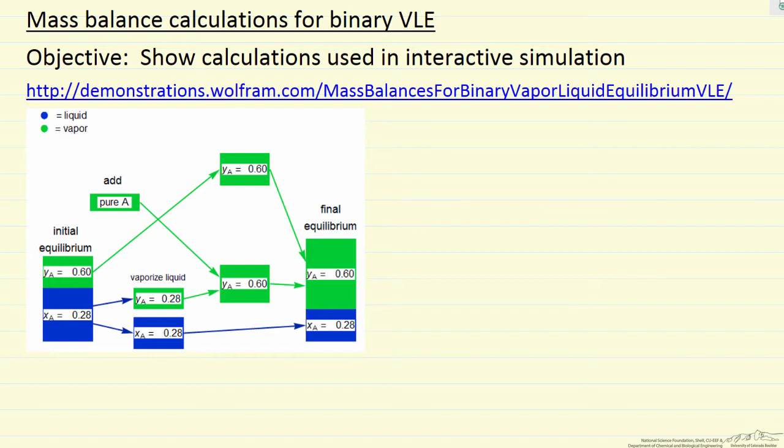In this particular simulation, our initial condition is 10 moles, and the overall composition, the overall mole fraction, let's call it ZA1, is 0.4, in other words 4 moles of A, 6 moles of B.